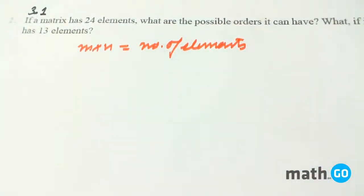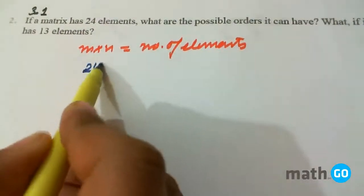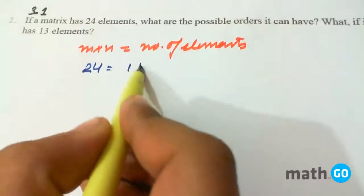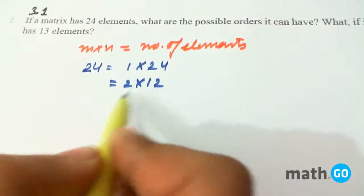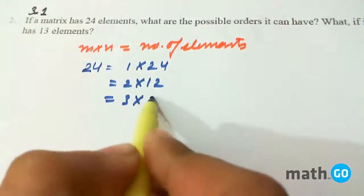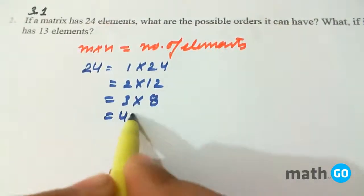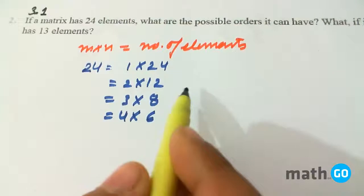So, 24 elements would mean 1 cross 24 or 2 cross 12 or 3 cross 8 or 4 cross 6.